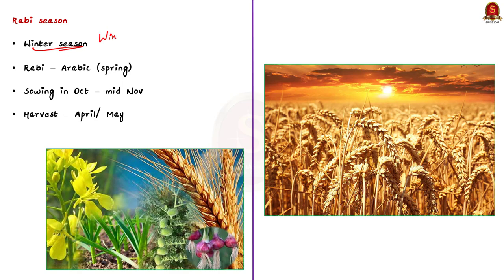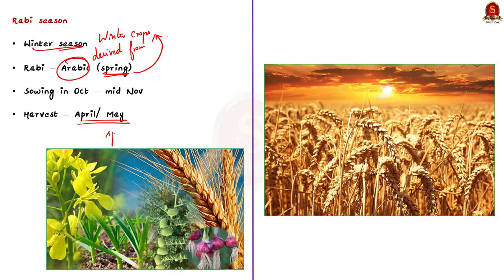Fascinatingly, the word Rabi is derived from Arabic, which means spring. Rabi crops are called as winter crops, but they are harvested in the spring season, and that is why the term Rabi is kept for these crops.